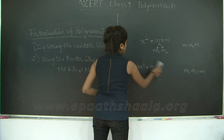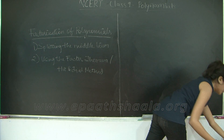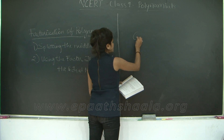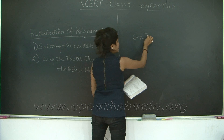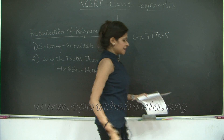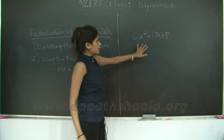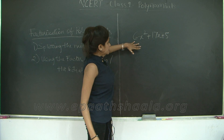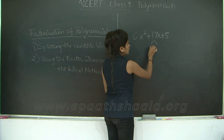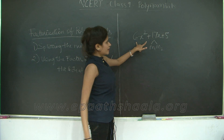Now we will take a look at a solved example from your textbook. Factorize 6x squared plus 17x plus 5 by splitting the middle term. You have to split 17 into two components m1 and m2 such that m1 into m2 gives you 6 into 5, which is 30.